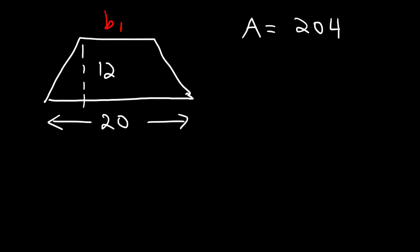Now let's say if we have another trapezoid with a height of 12 and a base of 20. And let's say you're given the area of this trapezoid. Let's say it's 204 square units. What is the length of the shorter base? Sometimes you may need to find a missing side of a trapezoid. And as long as you have everything else, it's not going to be too difficult.